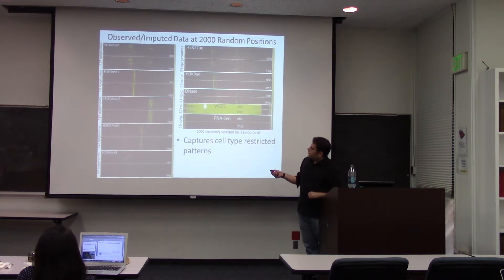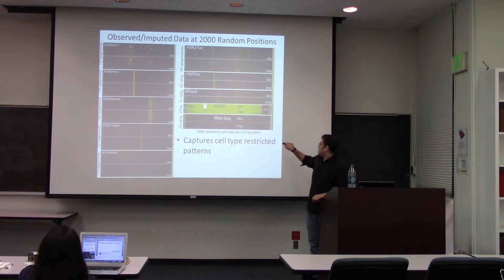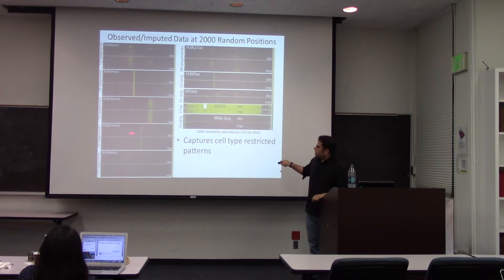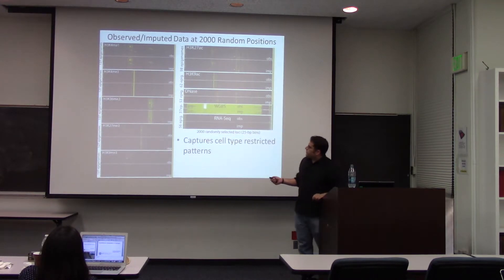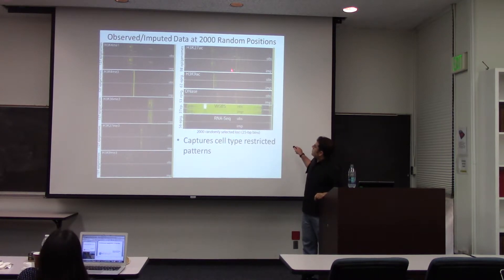Another visualization shows pairs of heat maps — each pair corresponds to different marks, rows correspond to different cell and tissue types, and columns to randomly selected locations. Within each pair you have observed and imputed, where yellow corresponds to greater signal and blue to lower signal. Visually, we capture a lot of the structure of the data, including more cell type restricted patterns.